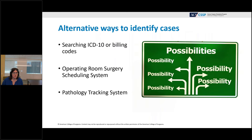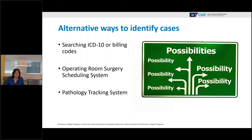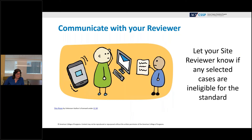For programs reviewed early in the calendar year when cases may not yet be abstracted, alternative methods to identify cases include searching ICD-10 or billing codes, working with the operating room surgery scheduling system, or using the pathology tracking system. The pathology department is often the best resource to pull those procedures. If any cases selected by the site reviewer are ineligible for the standard, please notify the reviewer so they can choose an alternative.